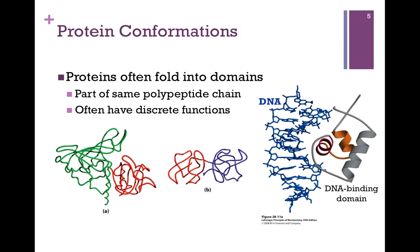Proteins can fold into distinct domains even within the same polypeptide chain, often because different domains have different functions. In part A, a single polypeptide chain folds into two separate distinct domains, colored red and green, with different sizes and shapes relating to their function. Remember, structure always relates to function. In part B, we have a single chain with two domains that are more symmetrical in structure. Finally, on the far right, we have illustrated the DNA binding domain of a protein, which is perfectly situated to interact with a DNA molecule. We'll return to this type of domain in a later chapter.